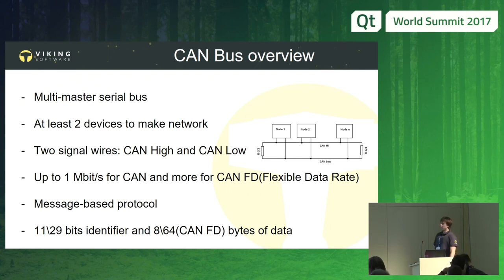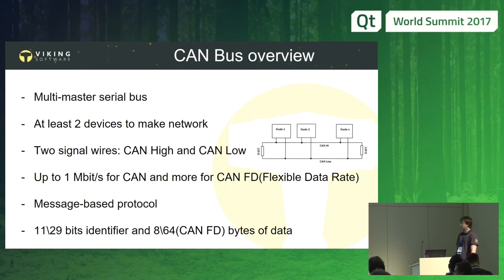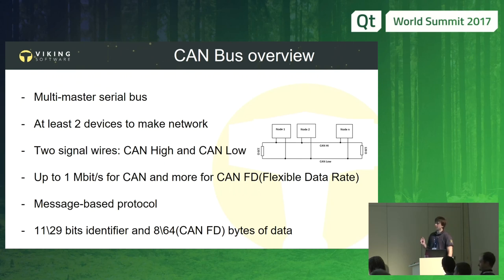Every frame in the CAN network is broadcast to every node, so it's not possible to send a specific frame to a specific node. But a node or device can filter some frames, for example by identifier. Also, the most important thing is that devices talking to each other must be configured to the same speed in the CAN network.